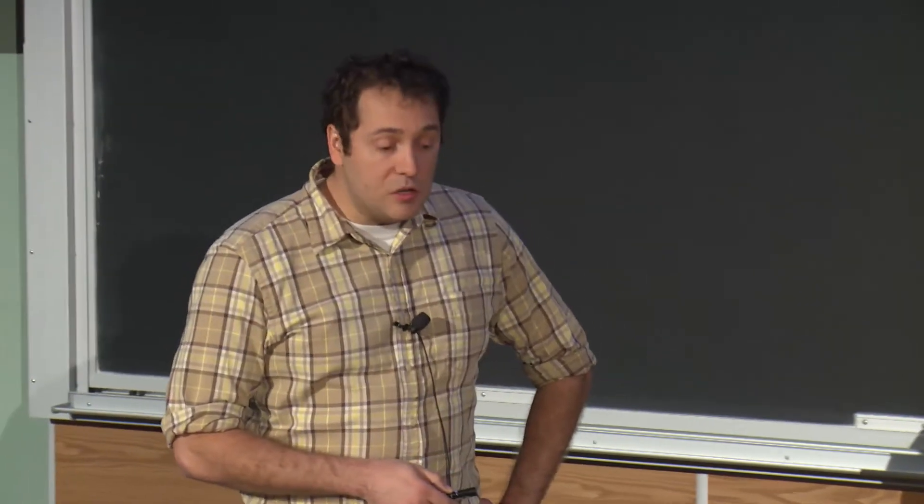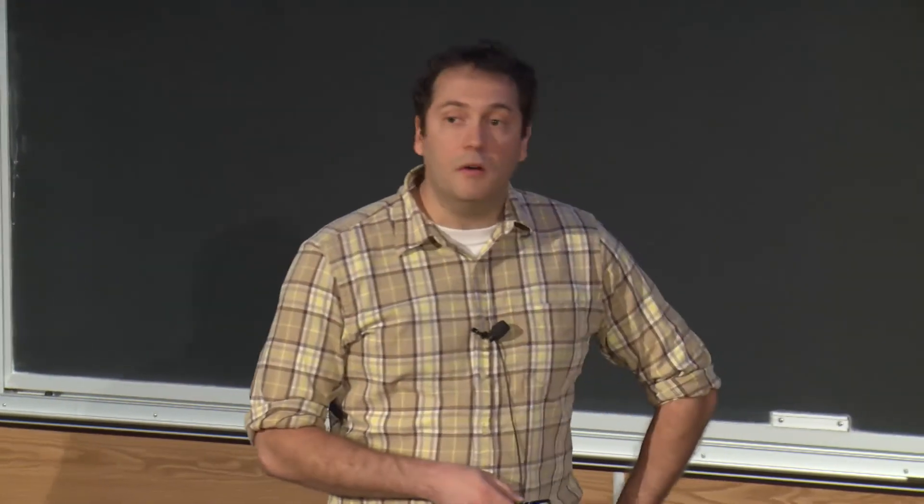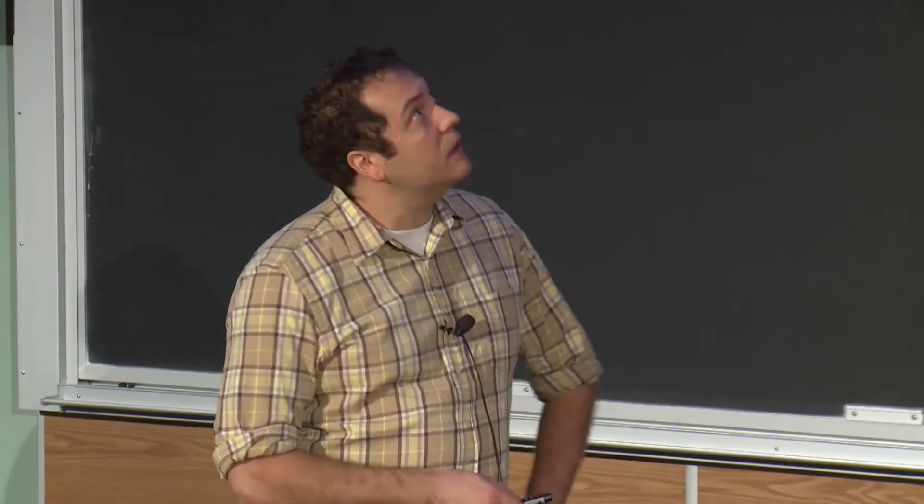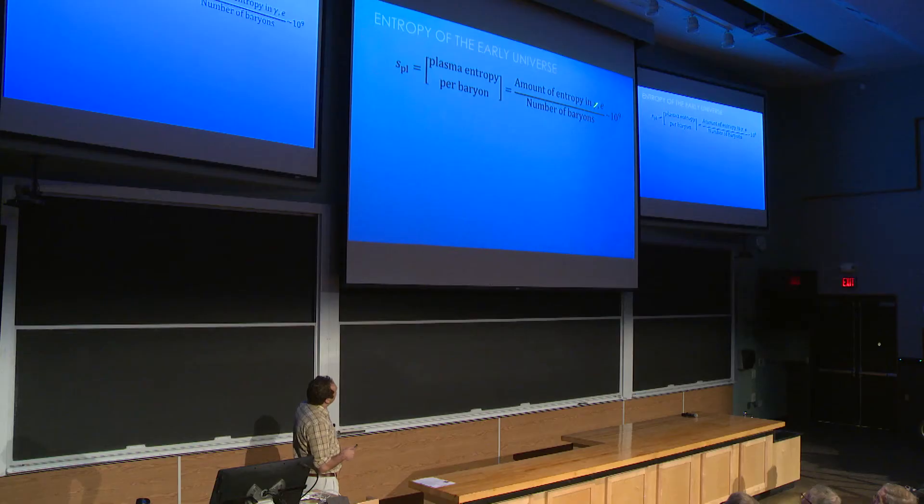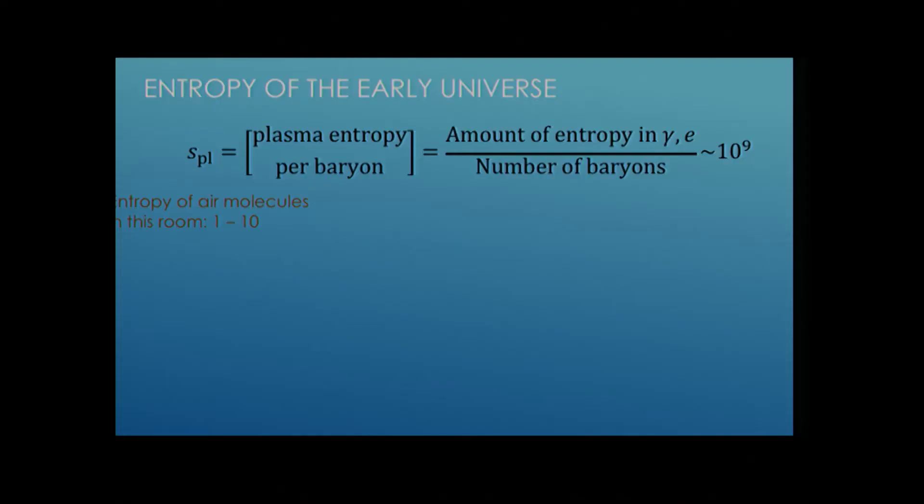Lepton annihilation is when the electrons and the positrons annihilate to produce two photons, and they essentially go away except for the ionization electrons for charge neutrality. And then this last sub epoch is the synthesis of the light elements. And so this occurs over about 100 seconds, which is about 100 Hubble time. So this is actually a pretty slow process. So we've mentioned earlier the number of baryons is an important input into BBN. Another way to say this is actually the entropy.